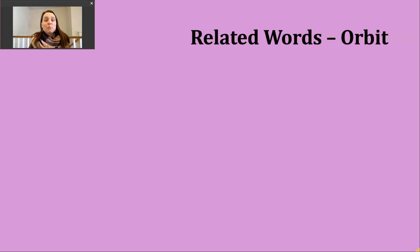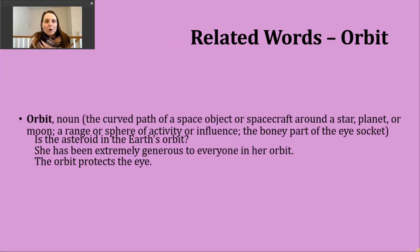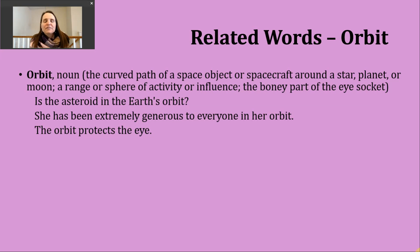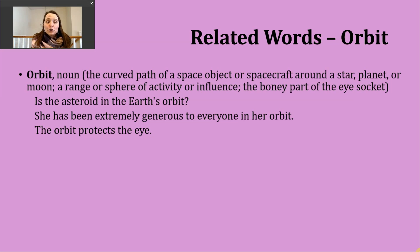Now let's look at some words related to our verb orbit. The first is just the noun form — same spelling, same pronunciation. Like the verb, the noun orbit has a few meanings. One way is to refer to the curved path of a space object or spacecraft moving around a star, planet, or possibly the moon. Example: is the asteroid in the Earth's orbit — meaning, is it in our curved path?